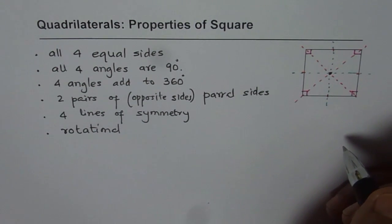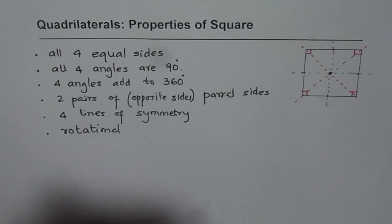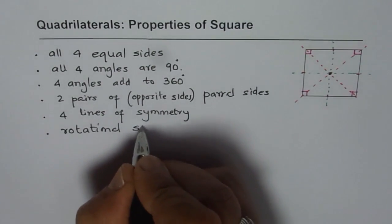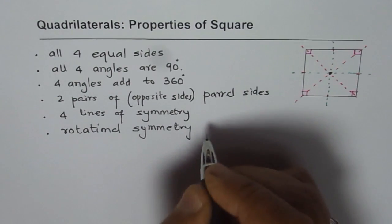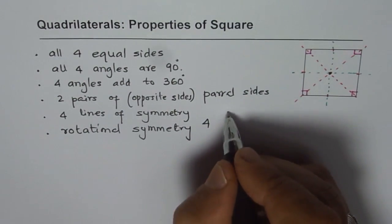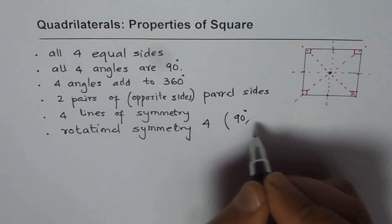How about rotating by 180 degrees, 270 degrees and 360 degrees? We get exactly the same figure. And therefore, we say that the rotational symmetry for square is how much? Is 4.